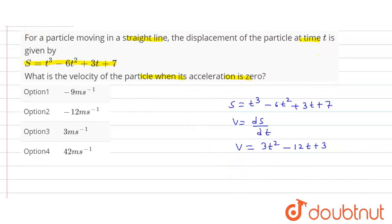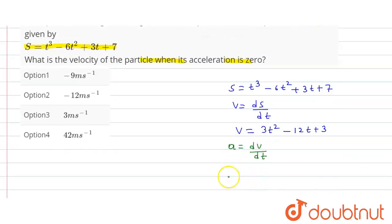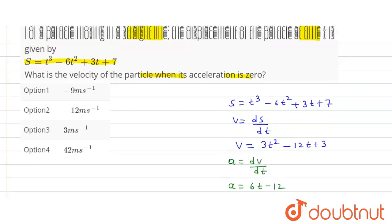And we know the acceleration a is equal to dV upon dt. When we differentiate velocity, we will get acceleration. So acceleration is equal to 6t minus 12.